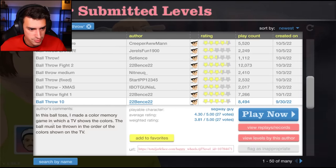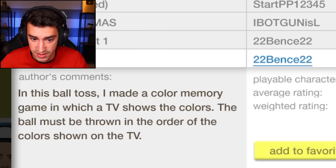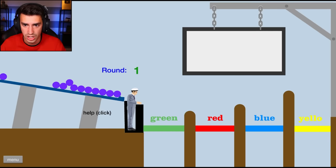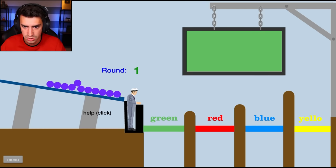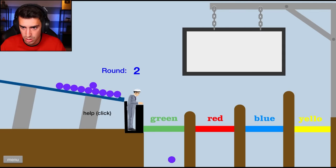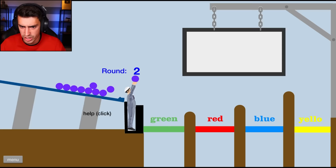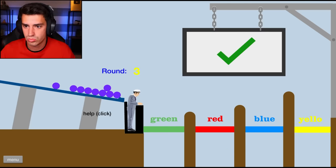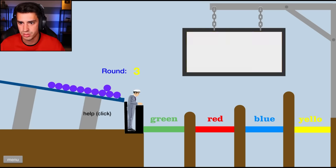Ball throw 10. In this ball test, I made a color memory game in which a TV shows the colors. The ball must be thrown in the order of the colors shown on the TV. That's cool. Okay. Start. Do I just... Oh, I see. All right. Green. Green. Is it green? Is it... Am I doing it right? I did it. Okay. Blue. Green. Is it green-blue or blue-green? Okay. I got one in green. Dude, how are you supposed to get it in blue? Okay. I need to... Oh, I did it.